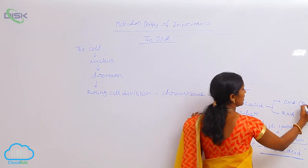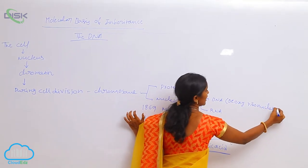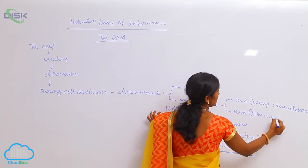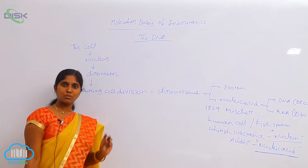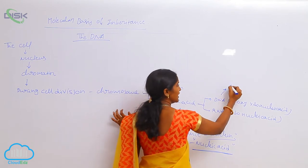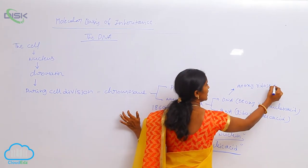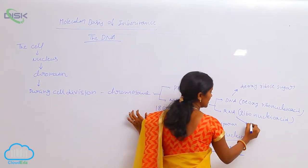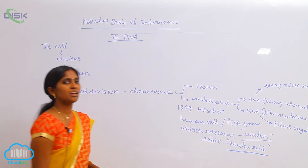DNA is nothing but deoxyribonucleic acid, whereas RNA is nothing but ribonucleic acid. The major difference between the two is the type of sugar present: deoxyribosugar is present in DNA, whereas ribosugar is present in RNA. This is the major difference between DNA and RNA.